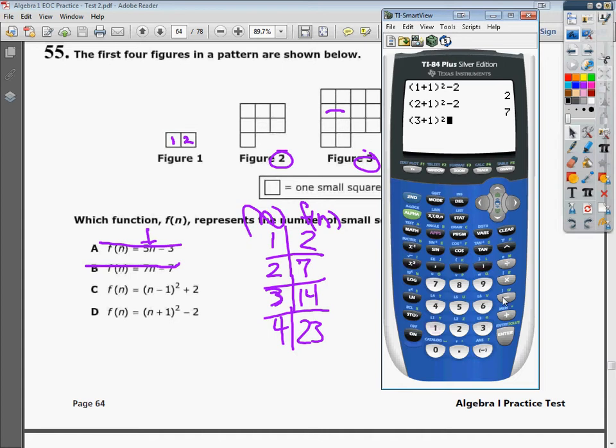Three plus one squared minus two gives me 14. And then I'll do four plus one squared minus two. And I get 23. So all the numbers I punched in, they came out to give me the right answer.